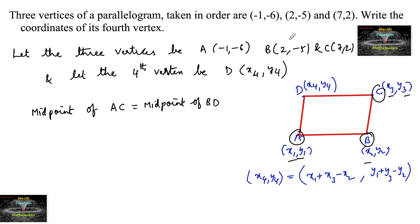So the midpoint of AC is ((-1+7)/2, (-6+2)/2), which equals the midpoint of BD: ((2+x₄)/2, (-5+y₄)/2).